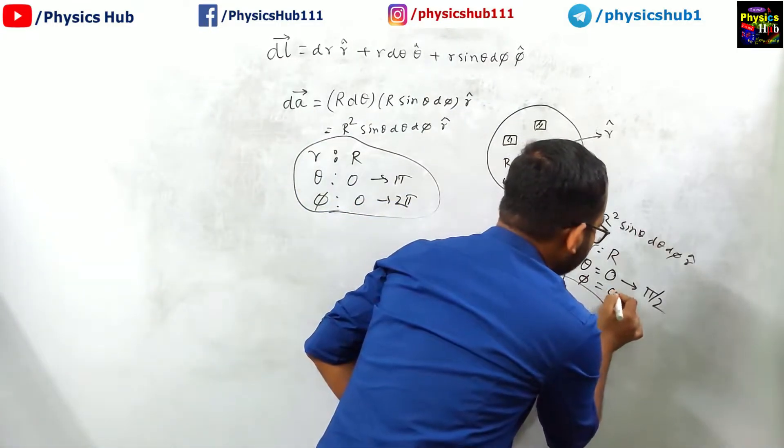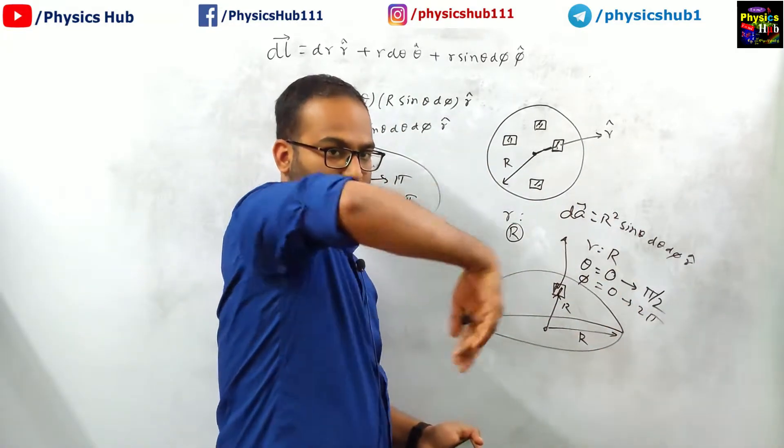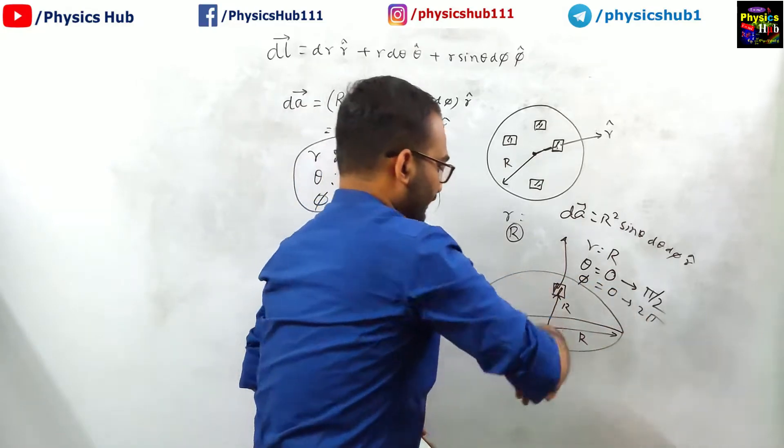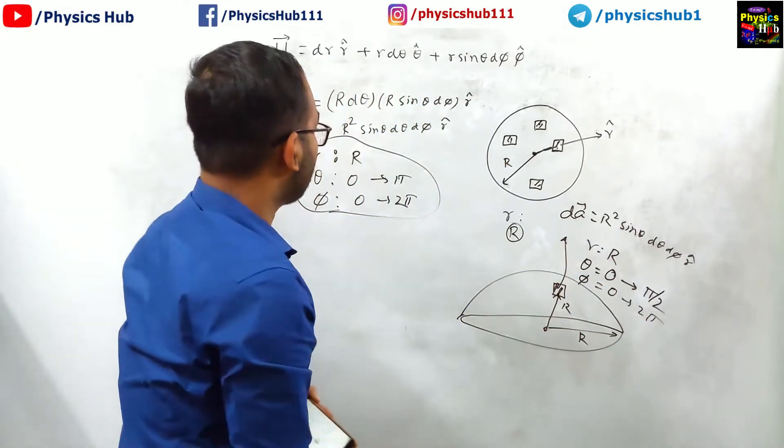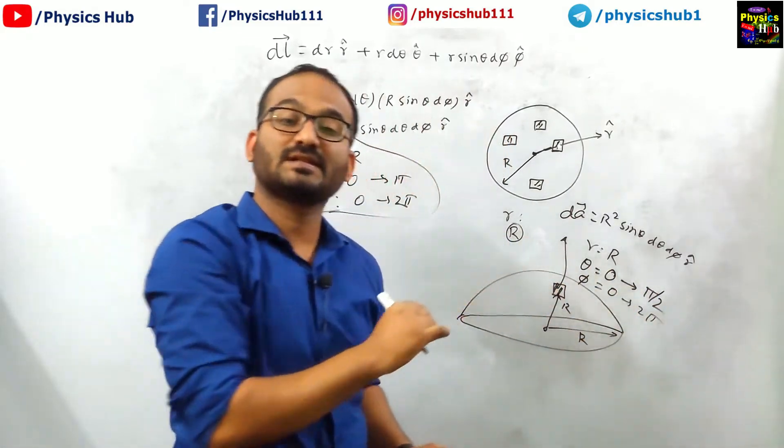But phi does not change, phi remains 0 to 2 pi, because we have to cover the whole thing, but theta is half. So instead of 0 to pi, theta will be 0 to pi by 2 for this hemispherical surface.